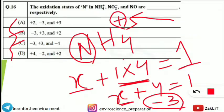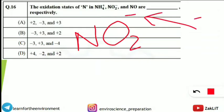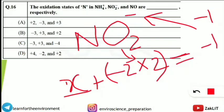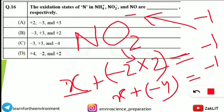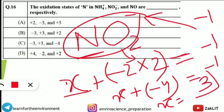For NO2-: the overall charge is -1. Oxygen's oxidation state is -2, and there are 2 oxygen atoms. Writing the equation: X + (-2 × 2) = -1. Solving: X + (-4) = -1, so X = -1 + 4 = +3. The oxidation state of nitrogen in NO2- is +3.